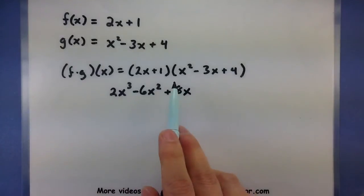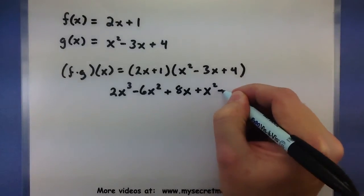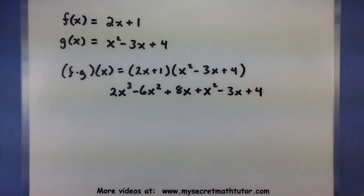So that has made sure that the 2x has now gone to all of the terms. We'll do the same thing for the 1. So now that we're done multiplying things together, we want to see if we can combine anything or simplify it further.